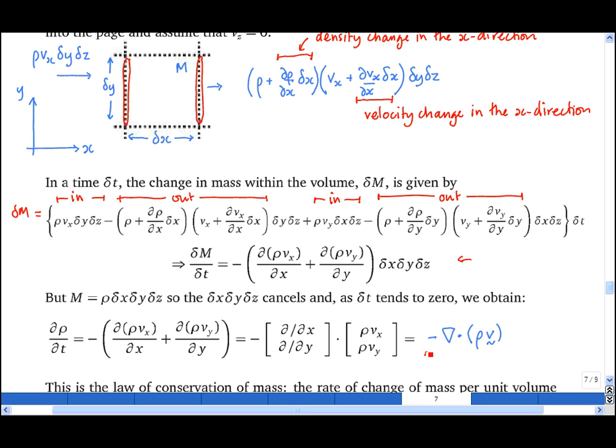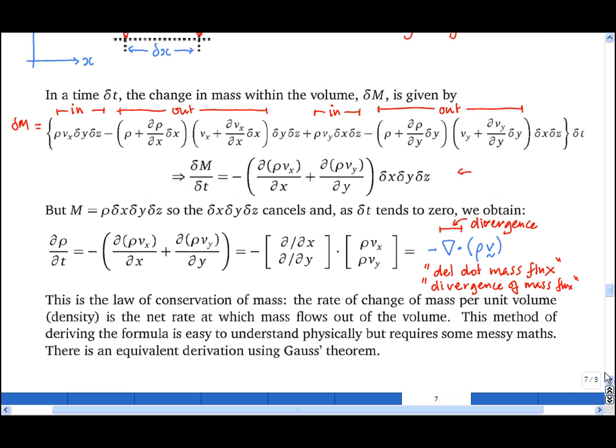You can say this is del dot the mass flux, and the operator del dot is known as divergence. So this can also be called the divergence of the mass flux. I like this derivation because it's easy to understand physically, but the maths is somewhat messy. You can also derive it using Gauss's theorem much more elegantly.